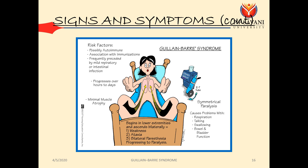Symptoms progress from the feet up to the respiratory muscles and trunk. Risk factors include a possibly autoimmune mechanism associated with immunization, frequently preceded by mild respiratory or intestinal infection. Progress occurs over hours to days with minimal muscle atrophy. An endotracheal tube and ventilators may be needed. Symmetrical paralysis can cause problems with respiration, talking, swallowing, and bowel and bladder dysfunction. It begins in the lower extremities and ascends bilaterally, with weakness, ataxia, paresthesia, and progression to complete paralysis.